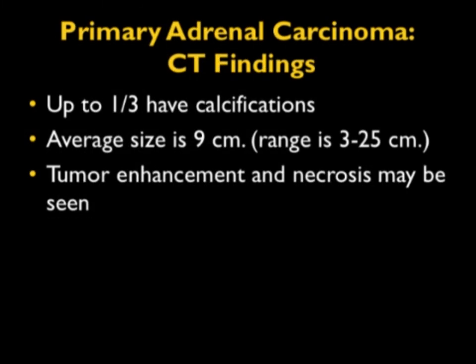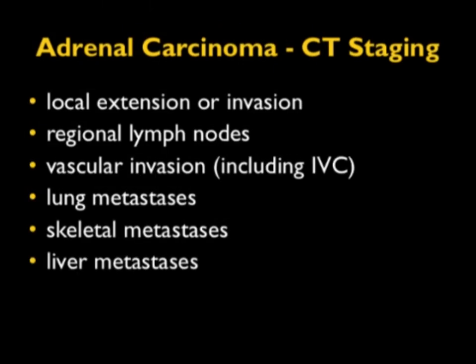When you look at primary adrenal carcinoma, about a third have calcifications, average size is about 9 cm, and enhancement and necrosis may be seen. When staging patients, we look for local extension or invasion, lymphadenopathy, and vascular invasion — renal veins and IVC are things we think about. Then you can see distant metastases to lung, bone, or liver. The problem with adrenal carcinoma is there's no good therapy — surgery is probably the best with aggressive resection, but often patients present with distant metastasis or local spread.